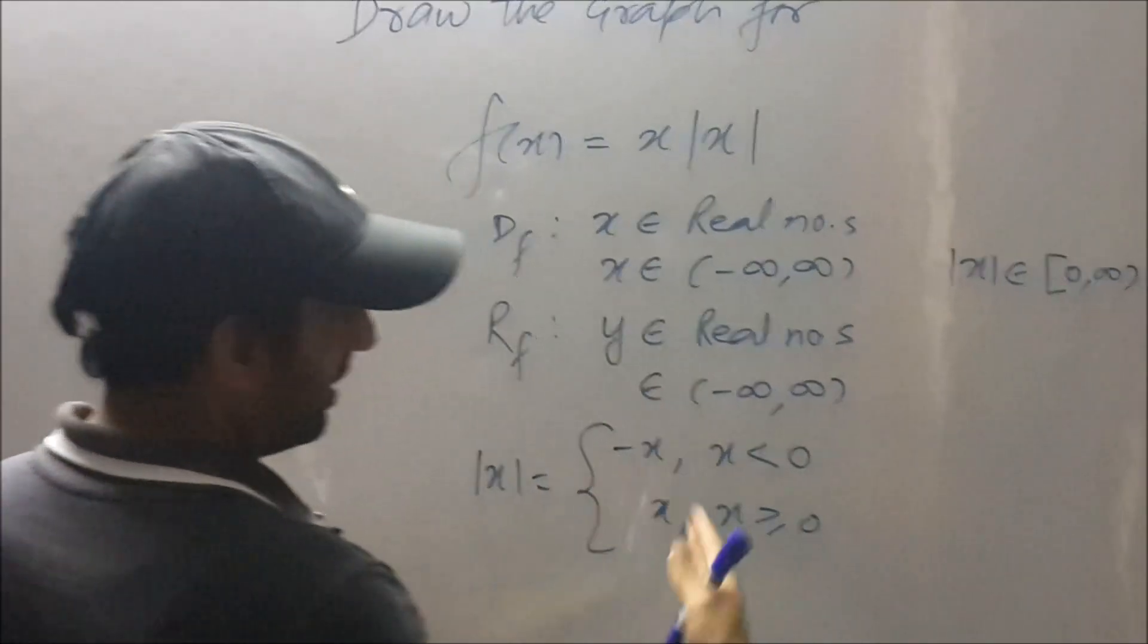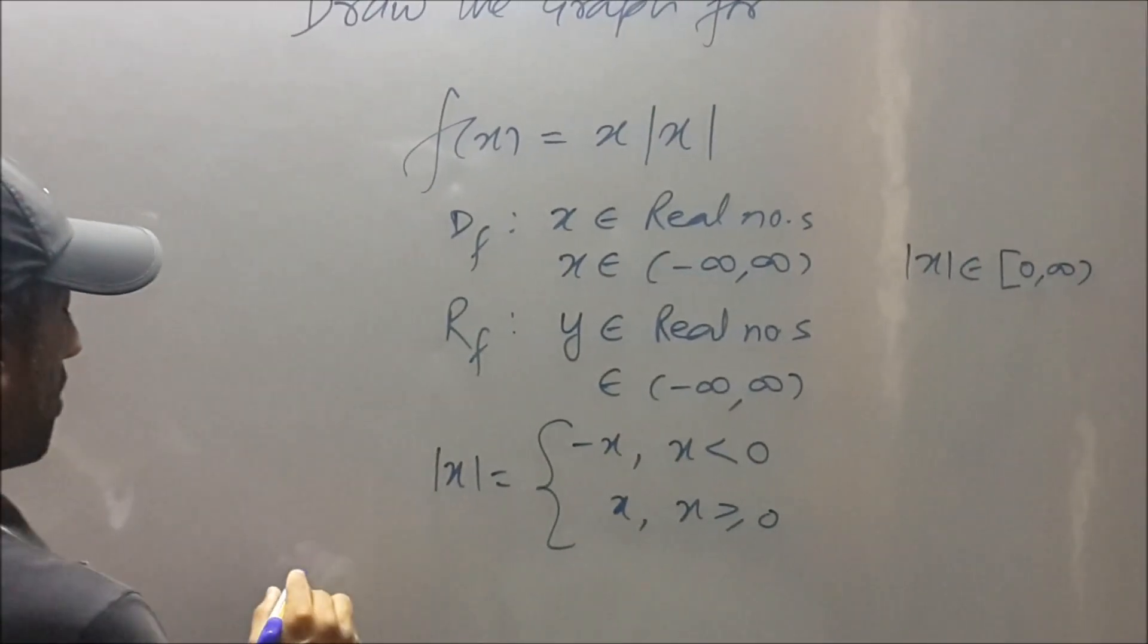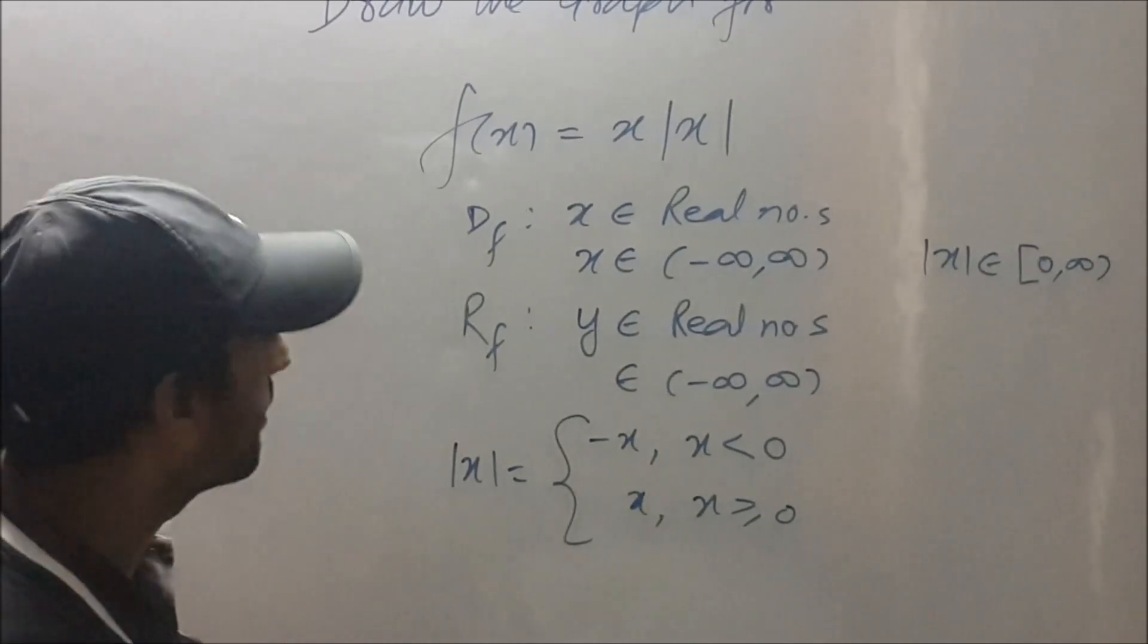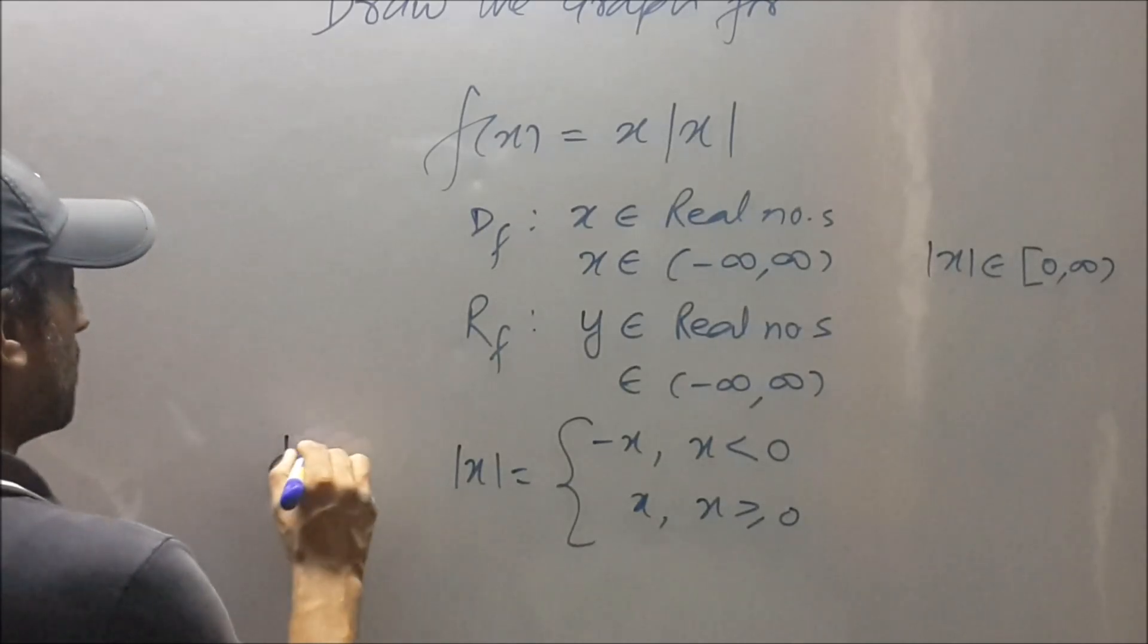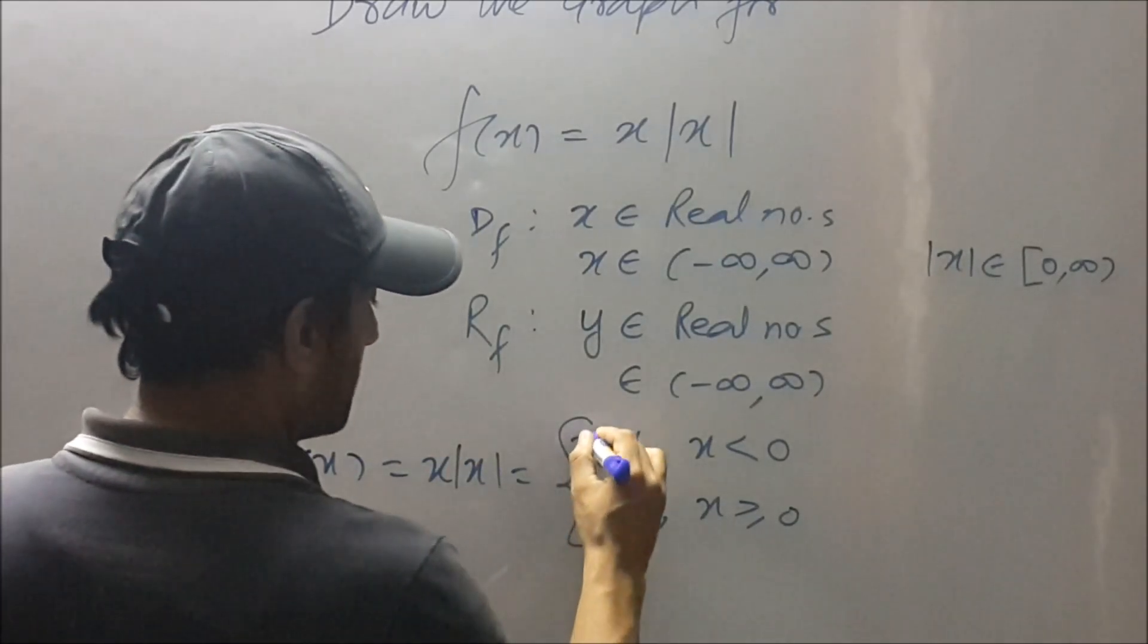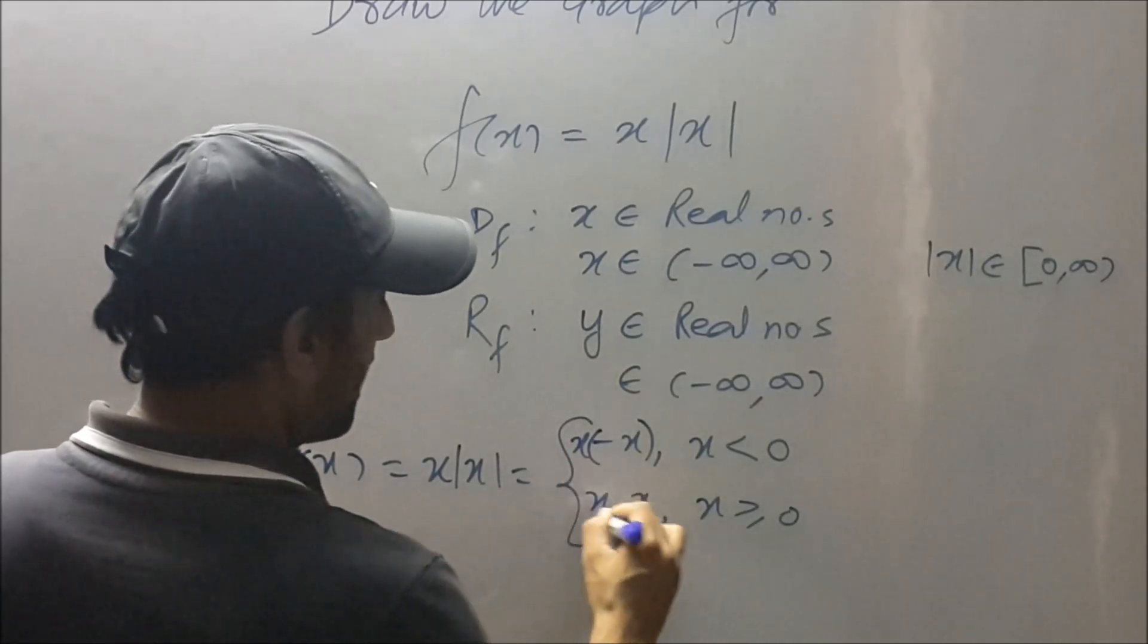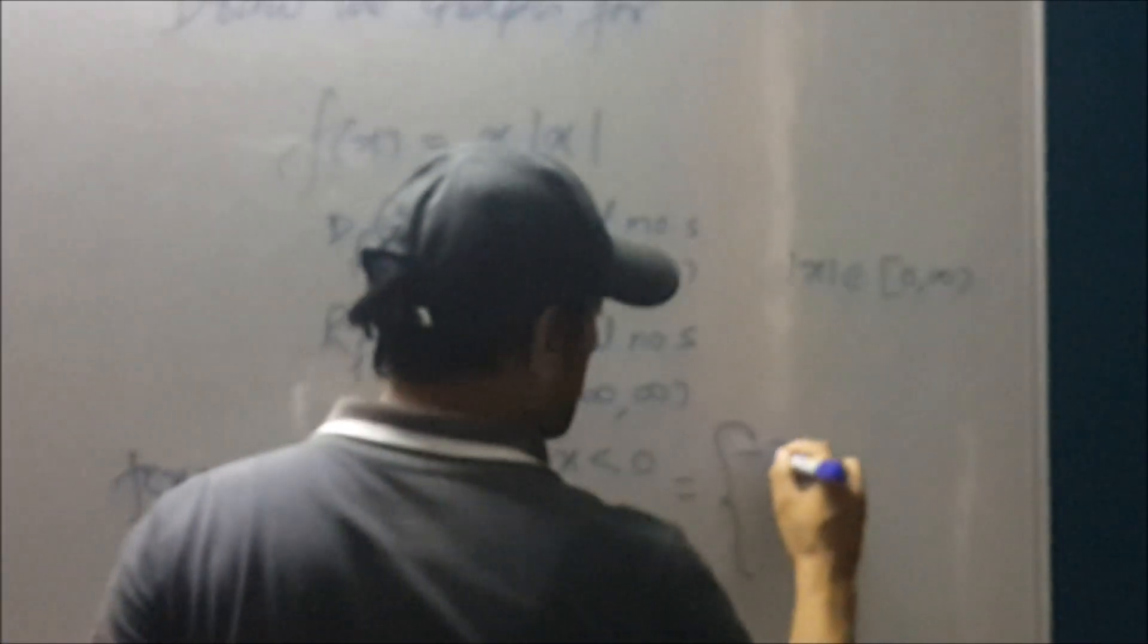This is positive x when x is greater than equal to zero and equality in mod function comes with greater than sign. And now coming on to the function. So when I have to make branches for the function, then automatically f(x) will be x times of mod x.